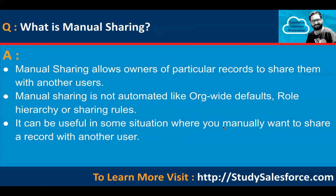What is manual sharing? Manual sharing allows owners of particular records to share them with other users. It is not automated like OWD, role hierarchy, or sharing rules — it can be useful when you manually want to share a record with another user. On each record, in the top-right dropdown with quick actions, you'll find a sharing button. You can choose which user to manually share that record with, and revoke sharing at any time.